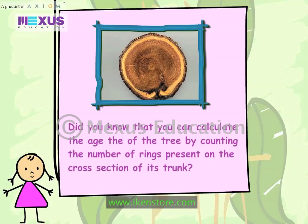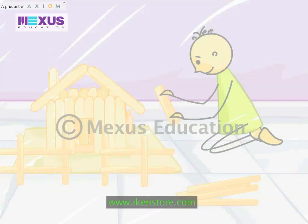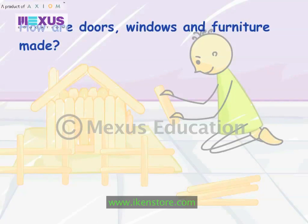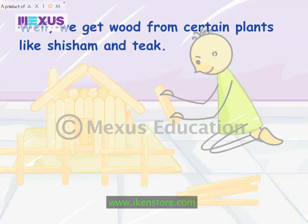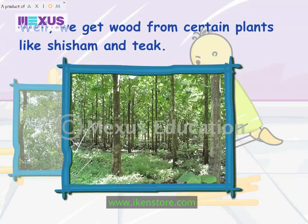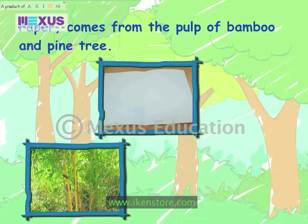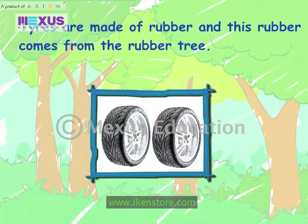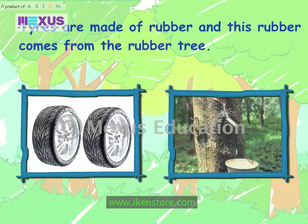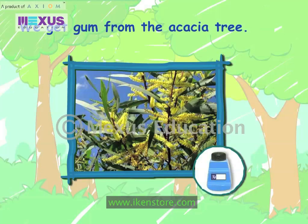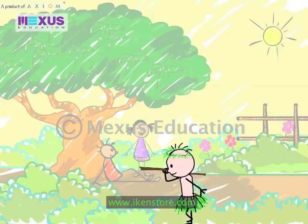Did you know that you can calculate the age of a tree by counting the number of rings present on the cross section of its trunk? How are doors, windows and furniture made? We get wood from certain plants like shisham and teak. Wood is also used as fuel. Paper comes from the pulp of bamboo and pine tree. Tyres are made of rubber and this rubber comes from the rubber tree. We get gum from the acacia tree.